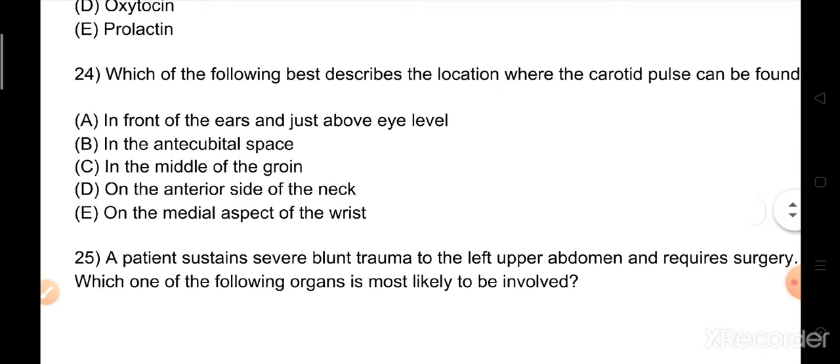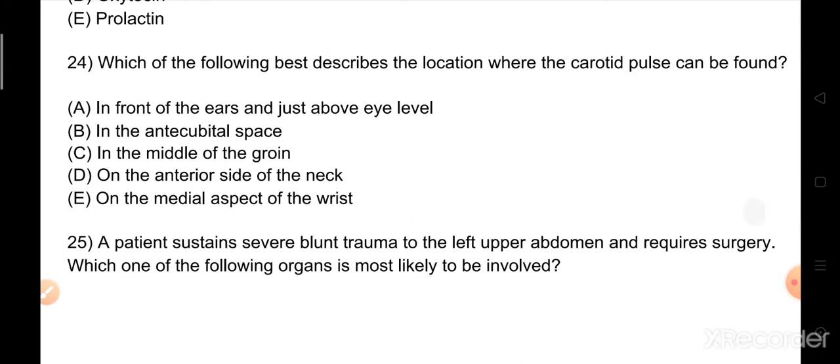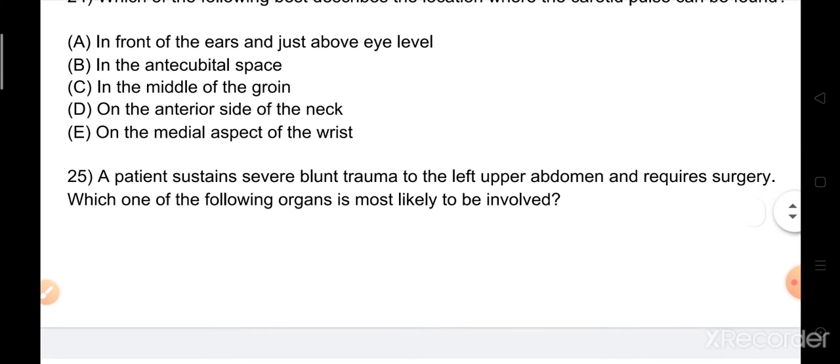Question number 24: Which of the following best describes the location where the carotid pulse can be found? Options: A) in front of the ear and just above the eye level, B) in the antecubital space, C) in the middle of the groin, D) on the anterior side of the neck, E) on the medial aspect of the wrist. The right answer is option D, on the anterior side of the neck, between the trachea and sternocleidomastoid muscle. This is the best place to check carotid pulse.